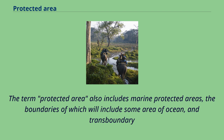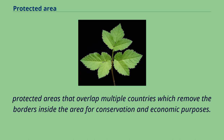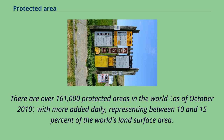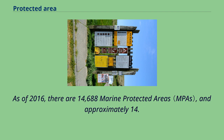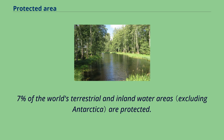The term protected area also includes marine protected areas, the boundaries of which will include some area of ocean, and transboundary protected areas that overlap multiple countries, which remove the borders inside the area for conservation and economic purposes. There are over 161,000 protected areas in the world with more added daily, representing between 10 and 15% of the world's land surface area. As of 2016, there are 14,688 marine protected areas, and approximately 14.7% of the world's terrestrial and inland water areas are protected.